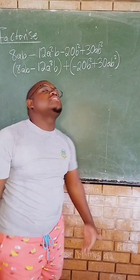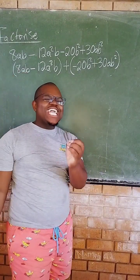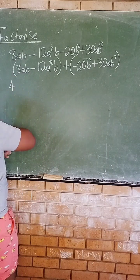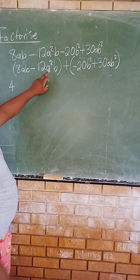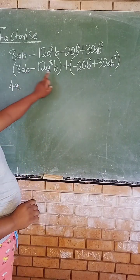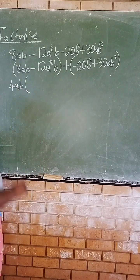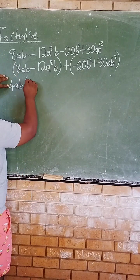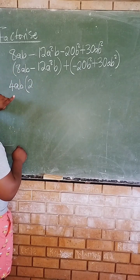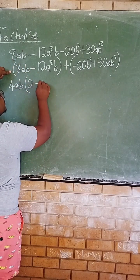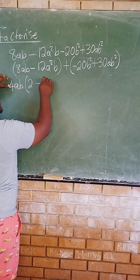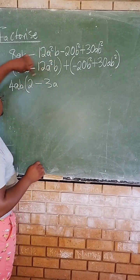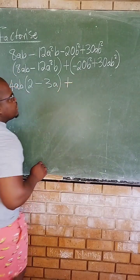Now since we have grouped, we must take out what we call a common factor — our highest common factor. The highest common factor for 12 and 8 is 4, so we take out 4. We also have 'a' in both terms, so we take one 'a' outside, and 'b' in both terms, so we take 'b' outside. What is left inside: 8 divided by 4 gives 2, a divided by a gives 1, b divided by b gives 1. Then subtract: 12 divided by 4 gives 3, a squared divided by a gives a, b divided by b gives 1.